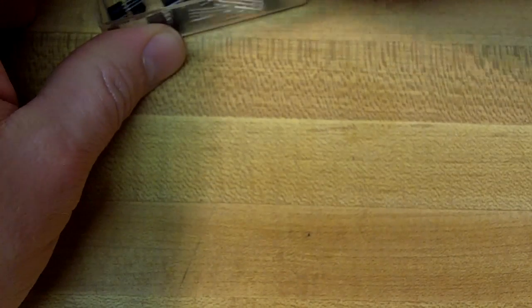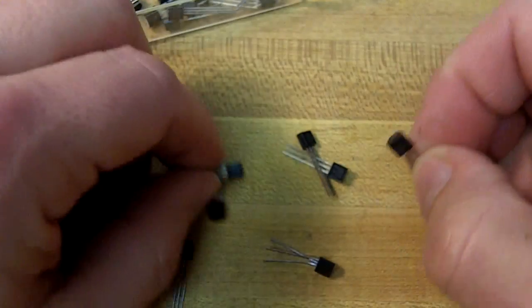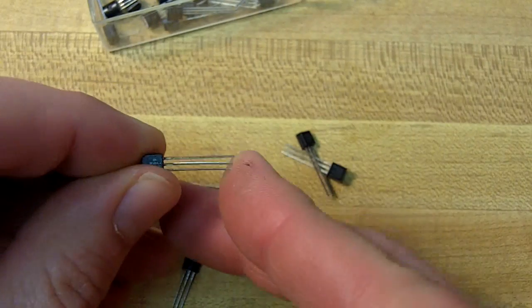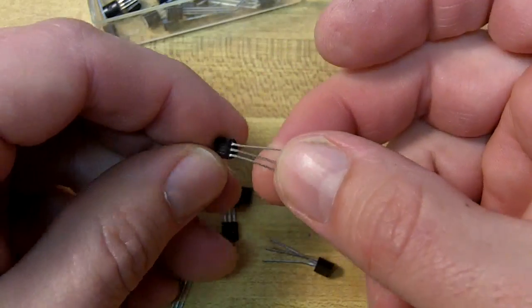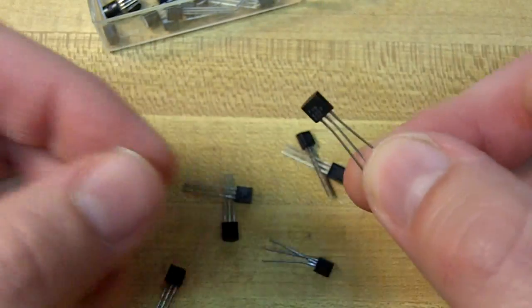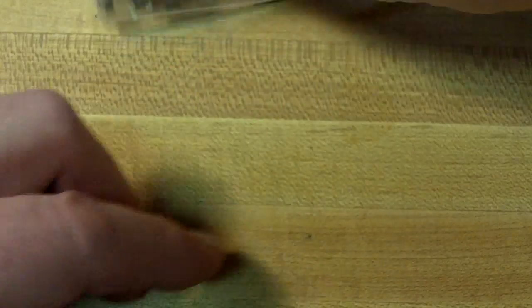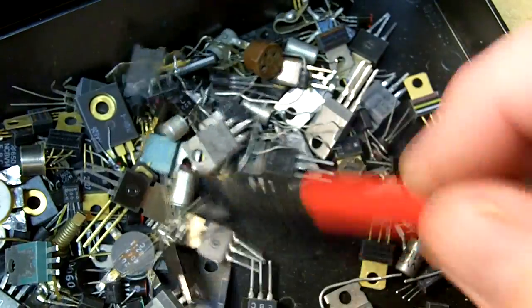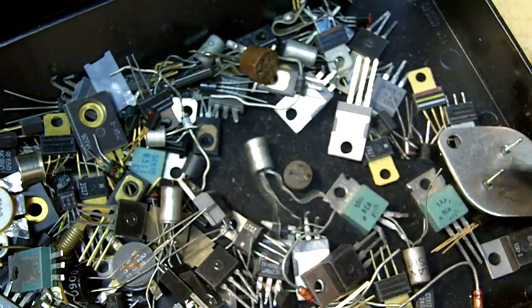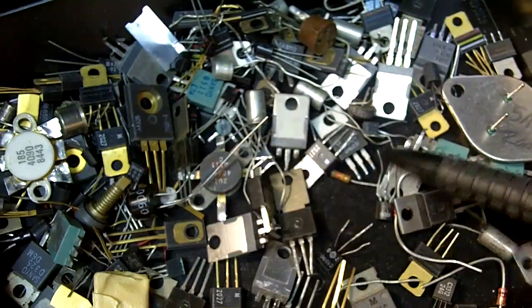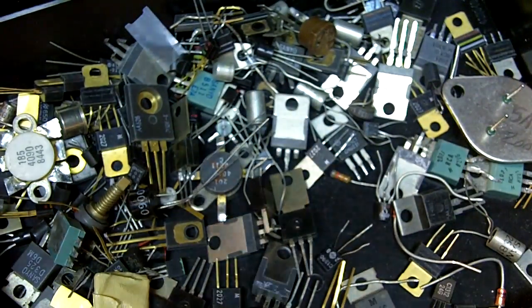Then we have transistors. Transistors look like this, these little black guys, and they have three legs on them. You'll see them a lot in circuits. They're usually three-legged devices. And they also come in different shapes and sizes. There's a much larger sized transistor, all designed for different uses. That might give you a little idea.